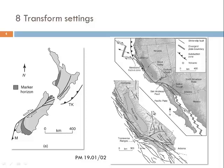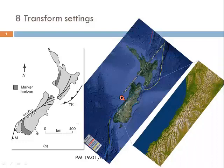Looking at the New Zealand situation in more detail, we see contractional zones — subduction zones with the Pacific plate on the right-hand side — grading into a transform fault, the Alpine fault crossing South Island, and converting again into a subduction zone further to the south. The coastal segment of the Alpine fault is fairly sharply defined in the topography. We have a low-lying coastline on the western side of the Alpine fault and high ground on the eastern side, suggesting a dip-slip component associated with strike-slip.